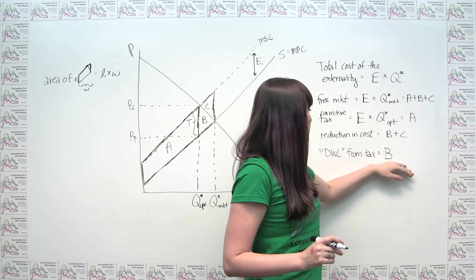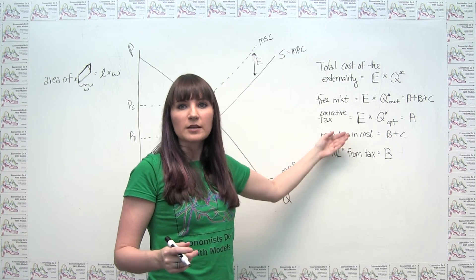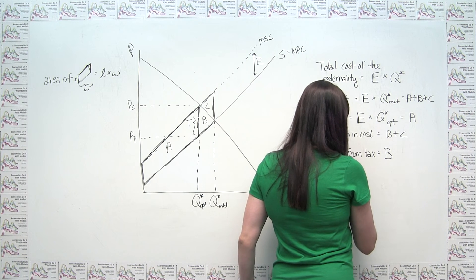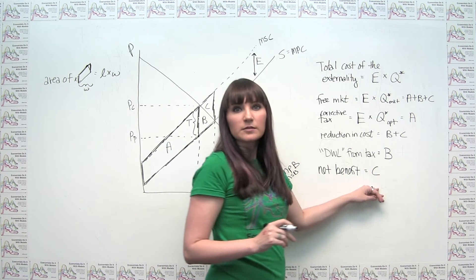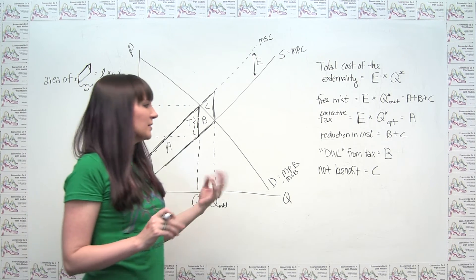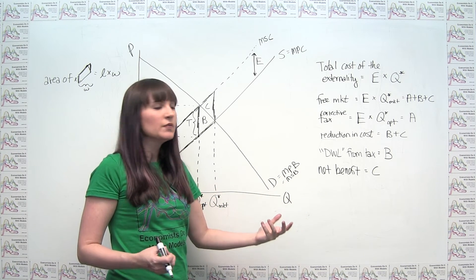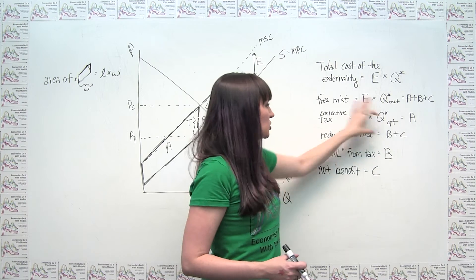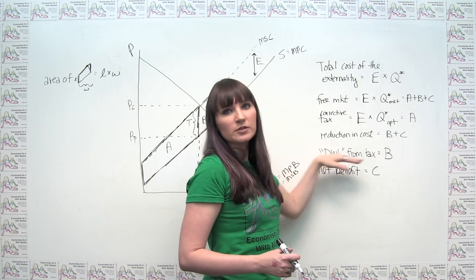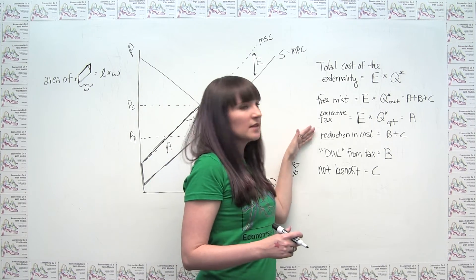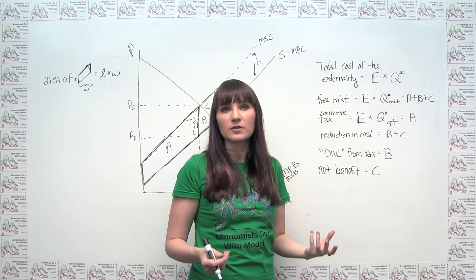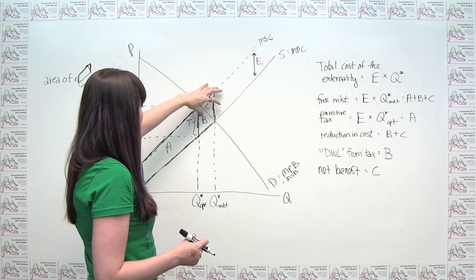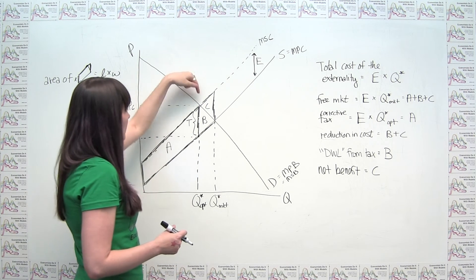Area B is less than the reduction in cost of the externality from reducing quantity produced and consumed. So the net benefit overall is equal to area C. It's not that the deadweight loss from the tax doesn't factor in — it's just that it is outweighed by the reduction in the cost of the externality. Consumers and producers are worse off in some way, but the benefits to society outweigh that by amount C.